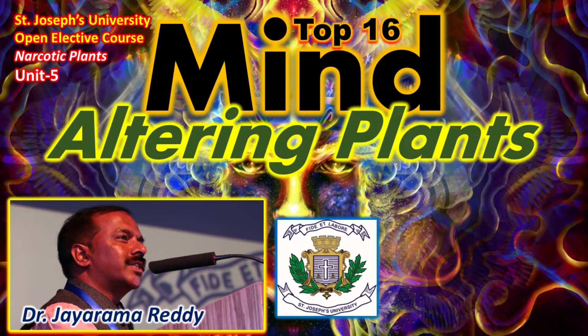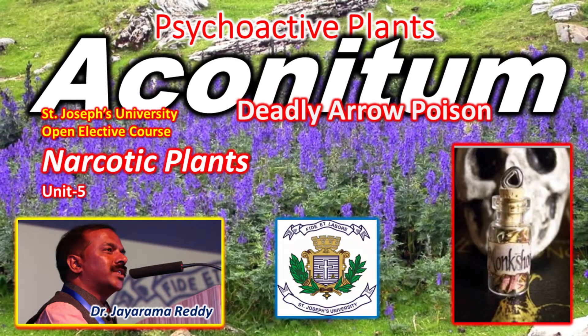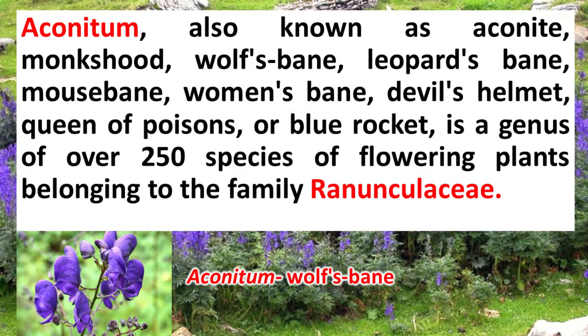These are also called mind-altering plants. In this video, I will discuss about one more narcotic plant called Aconitum. This is not a major narcotic plant — it is a minor narcotic plant. Aconitum belongs to the family Ranunculaceae. The genus Aconitum has about 250 species. Most of the species of this genus are said to be narcotic and they are highly poisonous.